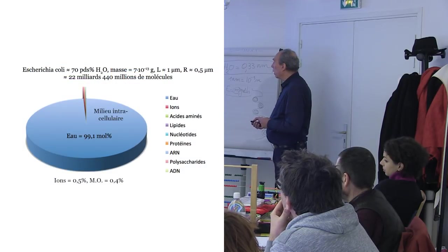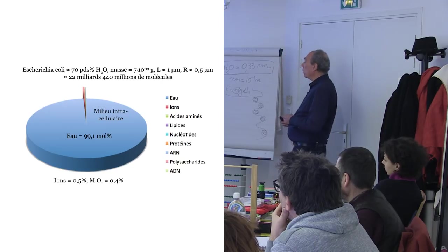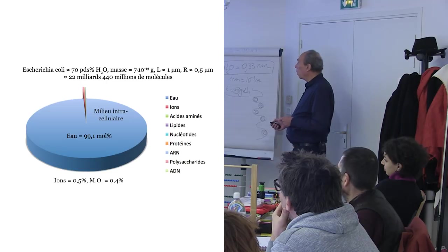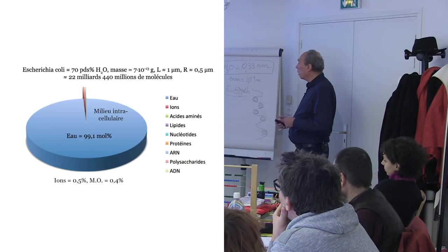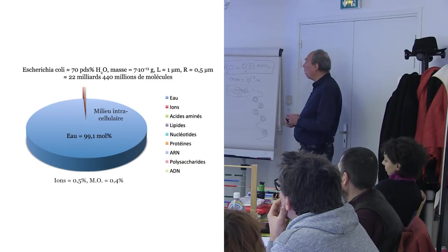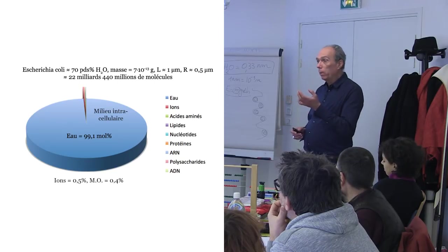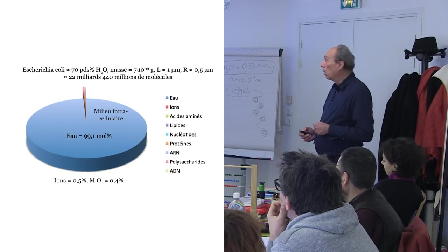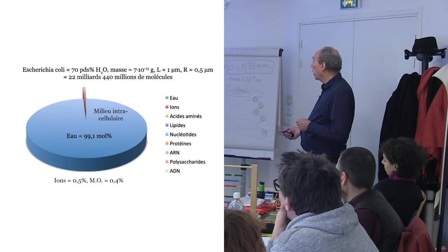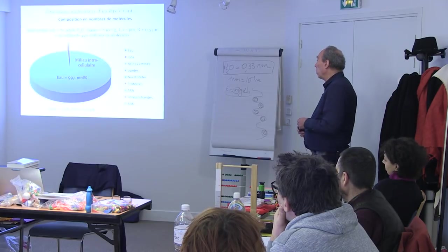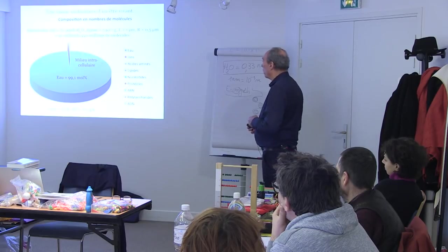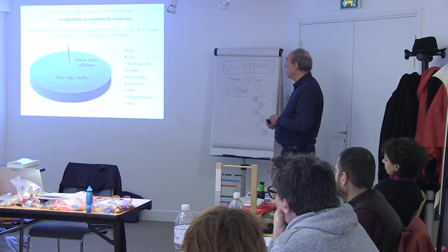On sait, par exemple, qu'une bactérie — si je prends 100 grammes d'Escherichia coli — j'ai à peu près 70 grammes d'eau, donc un poids de 70%. Je connais la masse de ces bactéries, elle est très petite, c'est 10⁻¹³ grammes. Je connais leur taille : ce sont des bactéries qui font 1 micron de longueur sur 0,5 micron de rayon, donc des petits cylindres. Une fois que vous avez ces chiffres, vous pouvez calculer combien il y a de molécules d'eau dans un être vivant — on est de l'ordre du milliard, 22 milliards de molécules d'eau.